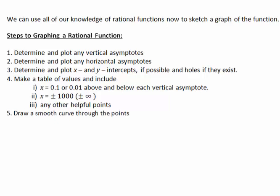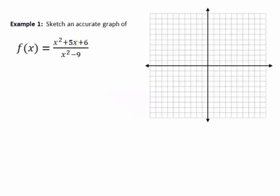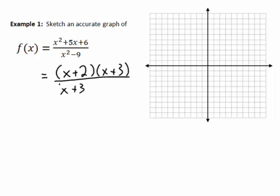Let's put this into practice with the function (x² + 5x + 6) / (x² - 9). The first thing we always want to do is factor, if possible, as this will allow us to determine any asymptotes and holes. With these easy quadratics factored, we can see that the (x + 3) terms cancel out, leaving us with a simplified function of (x + 2) / (x - 3).